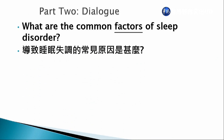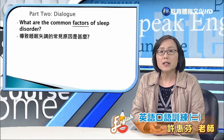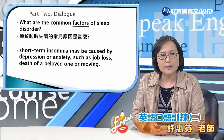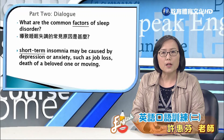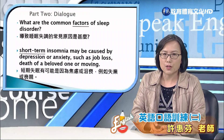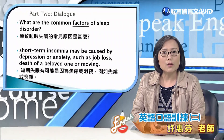What are the common factors of sleep disorder? 導致睡眠失調的常見原因是什麼？Common factors就是常見的原因，factor就是因素、causes的意思。Short-term insomnia may be caused by depression or anxiety. 短期的失眠有可能因為焦慮或沮喪所引起。Be caused by就是由什麼所引起的。Such as job loss, death of a beloved one, or moving.